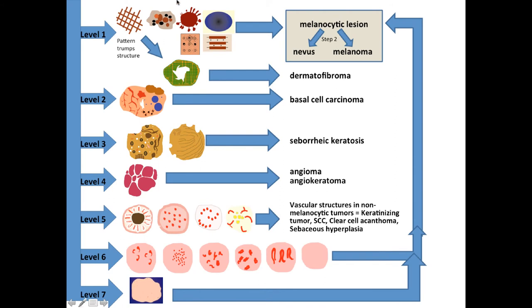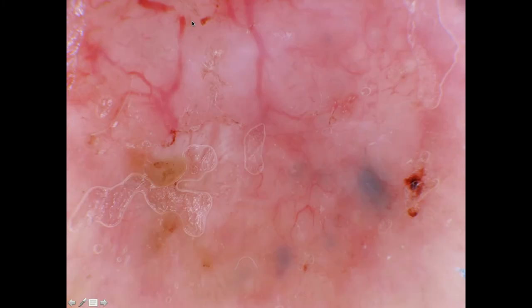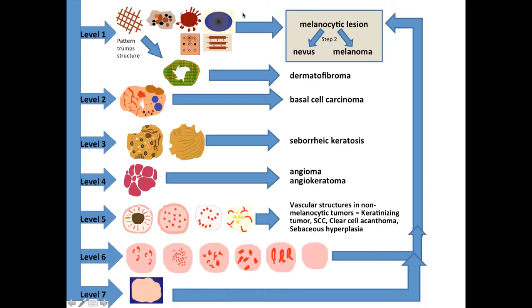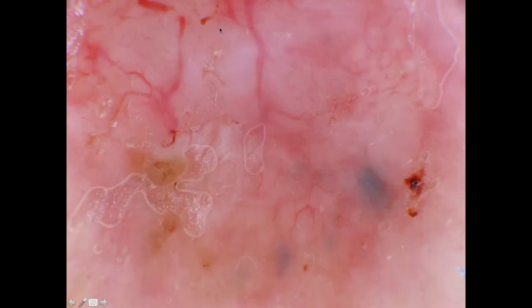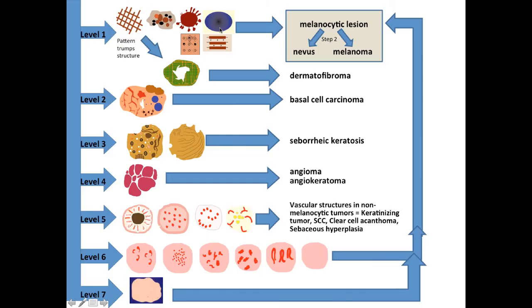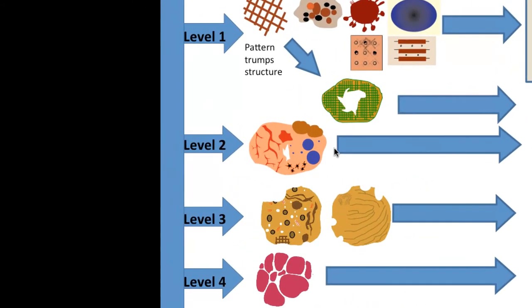First question: is this a melanocytic lesion? Do we see pigment network anywhere? No. Do we see aggregated globules? No. Do we see streaks at the periphery? No. Do we see a homogeneous blue area like in a blue nevus? No. Since none of those criteria are found, we move on to level two.